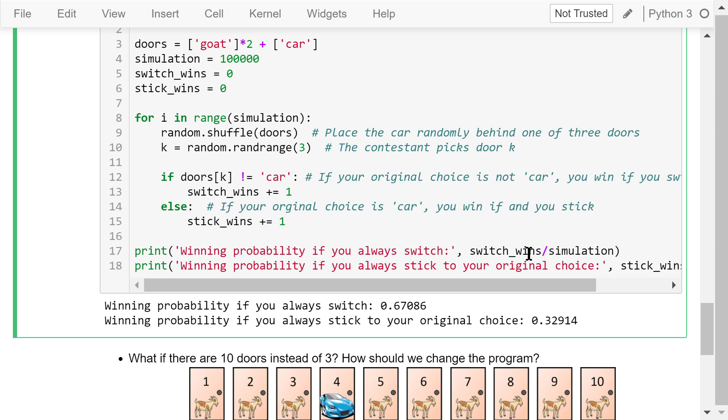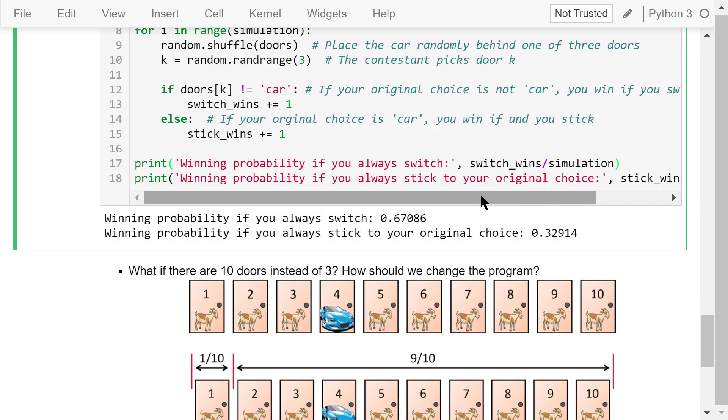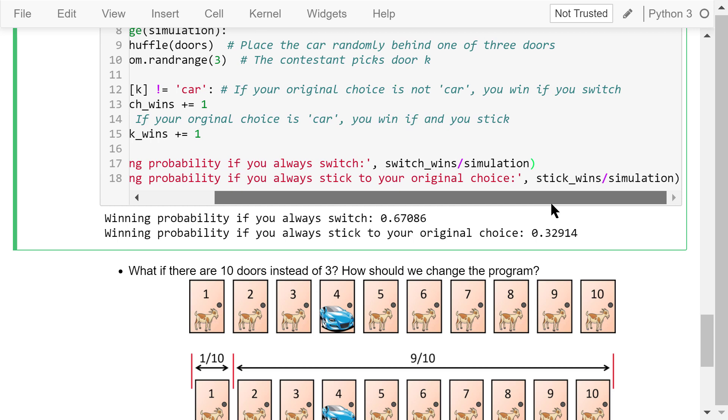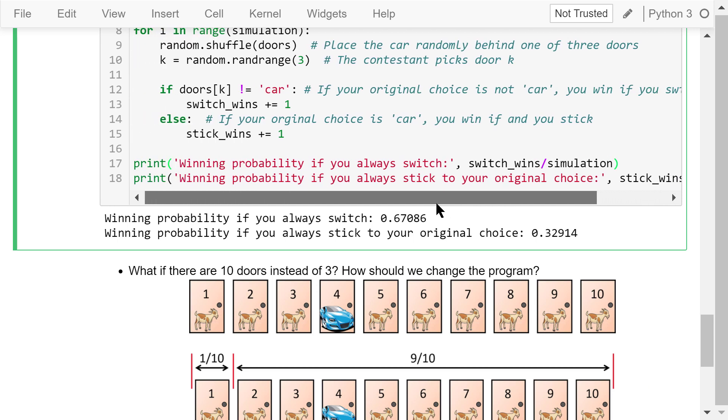After 100,000 simulations, we calculate the winning probability if the contestant always switches and the winning probability if the contestant always sticks to the original choice. This 0.67 is about two-thirds and this 0.33 is about one-third, which confirms our analysis.